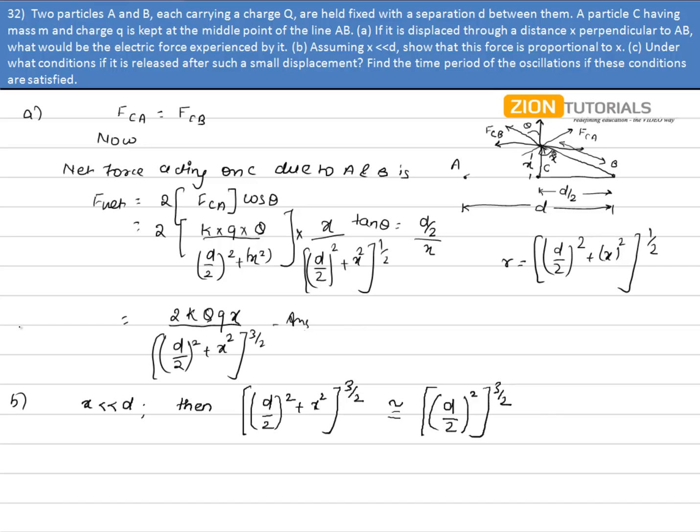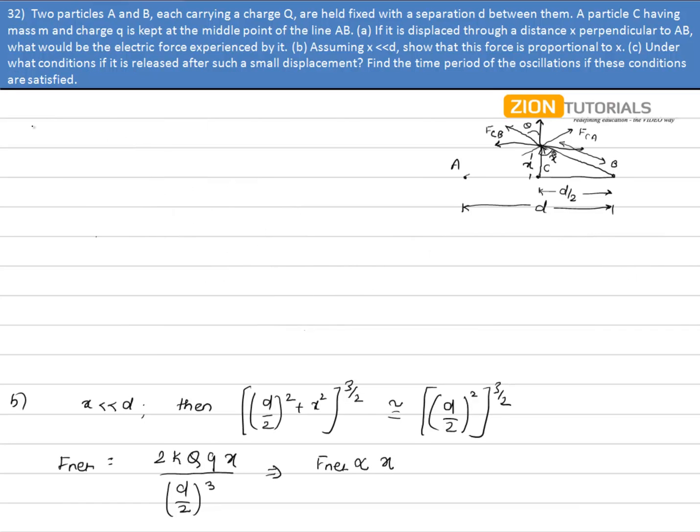So our F_net will turn into 2KQqx divided by d by 2 to the power 3, and clearly F_net is directly proportional to x. In part C, we had to calculate the condition that if it is released after such a small displacement, then what will be the time period.